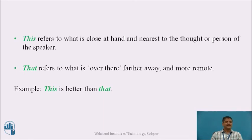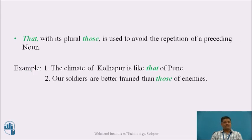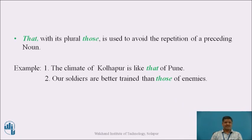'That', with its plural 'those', is used to avoid the repetition of a preceding noun. Example, sentence one: 'The climate of Kollapur is like that of Pune' — here 'that' is used to avoid the repetition of the preceding noun 'climate'. Likewise, in sentence two: 'Our soldiers are better trained than those of enemies' — 'those' is used instead of 'soldiers', which is the preceding noun, to avoid its repetition.